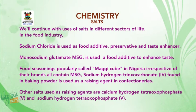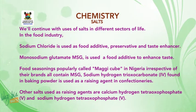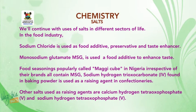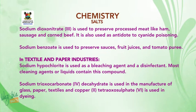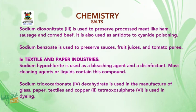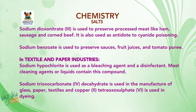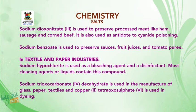Sodium hydrogen trioxyl carbonate 4, found in baking powder, is used as a raising agent in confectionaries. Other salts used as raising agents are calcium hydrogen tetraoxyl phosphate 5 and sodium hydrogen tetraoxyl phosphate 5. Sodium dioxyl nitrate 3 is used to preserve processed meats like ham, sausage, and corned beef. It is also used as an antidote to cyanide poisoning. Sodium benzoate is used to preserve sauces, fruit juices, and tomato puree.